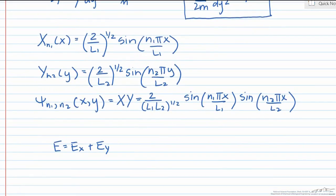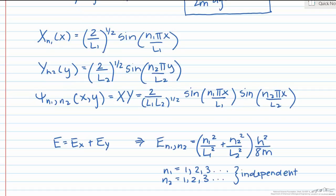Similarly, since we know e sub x and e sub y, and because the total energy is just the sum of these two, the total energy of the particle is then limited to the following values, with the two quantum numbers, n1 and n2, independently taking on the values 1, 2, 3, etc.